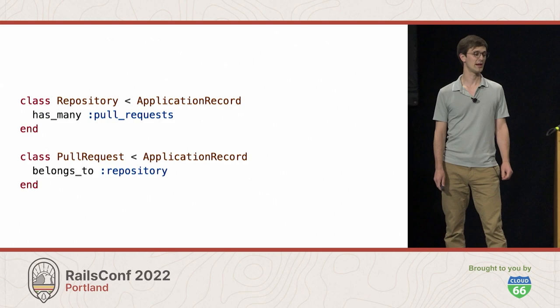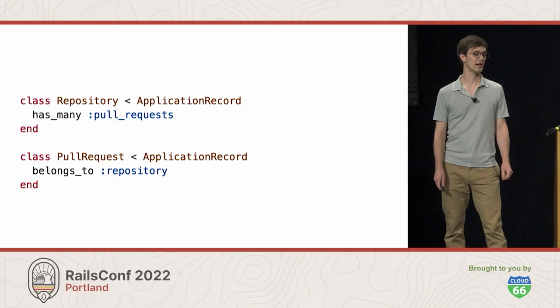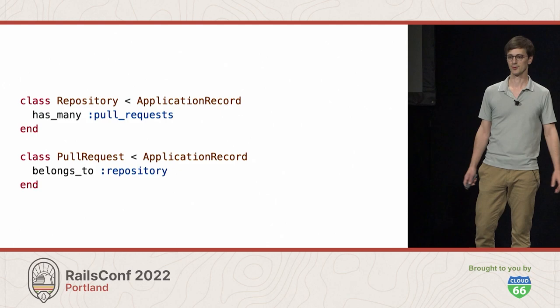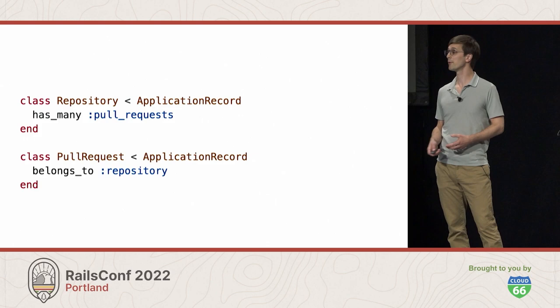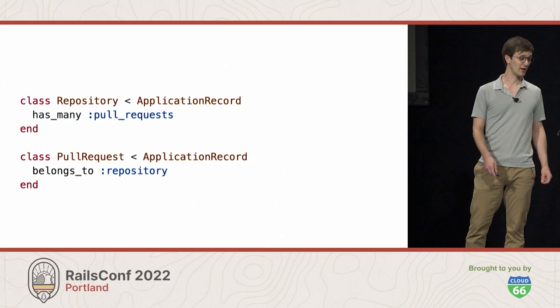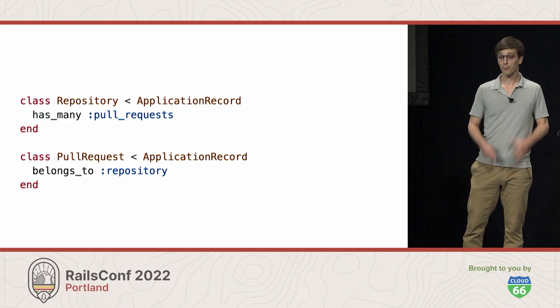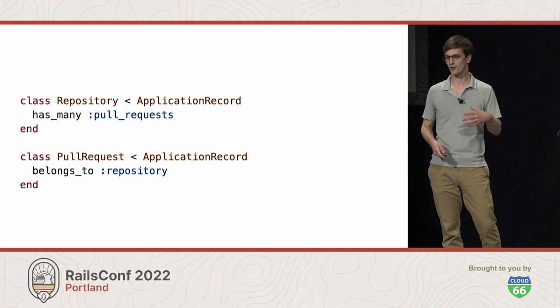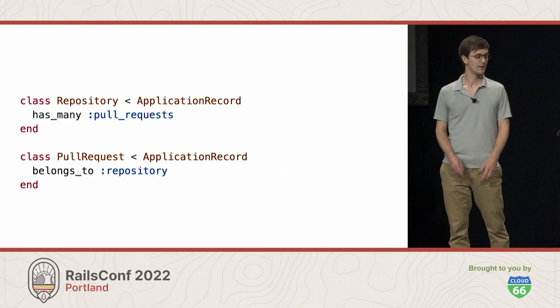I would like you to take a moment to think back to the first time you wrote an ActiveRecord association. It might have been recently; it might have been many years ago. Did you feel confused, or maybe impressed, by how much could be accomplished with so little code? I remember my first time well. I was a brand new programmer working through the Rails tutorial, and I wrote my first associations having really no idea what I was doing.